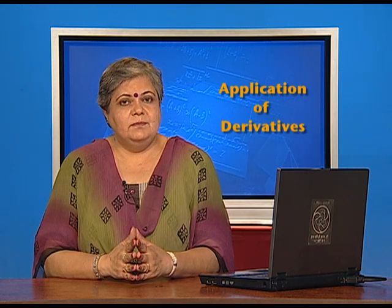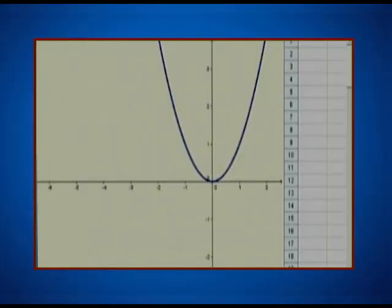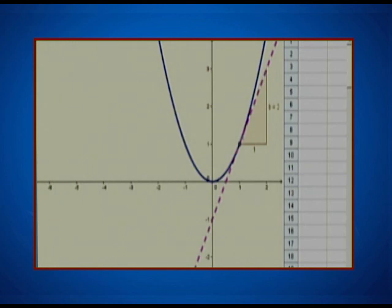Let us take a look at it through an applet. Here we have a graph of the quadratic function. Let us take a point A on this graph and construct a tangent at point A, and also measure the slope of this tangent. In this position the slope of the tangent is represented by the number B, which is taking the value 2. Let us also construct a point P which has the same x-coordinate as point A and the slope B as the y-coordinate.